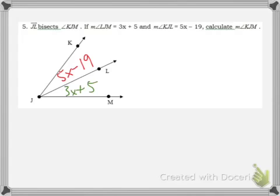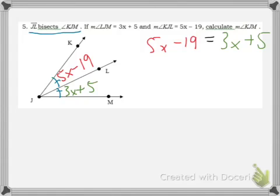We are asked to calculate the measure of angle KJM. But before we can do that, we have to figure out the value of x. Since we know that JL bisects that angle, we know that these two pieces of the angle are congruent. Thus, the 5x - 19 should be equal to 3x + 5. There. We have an equation that we can solve.